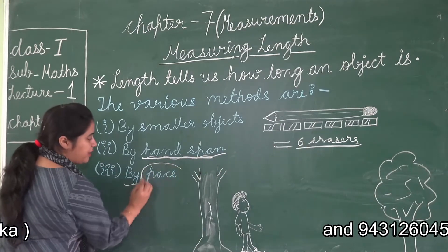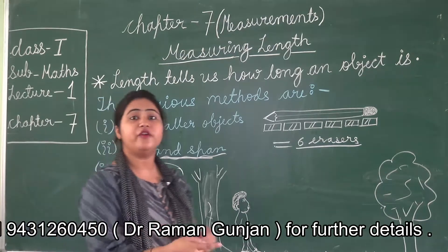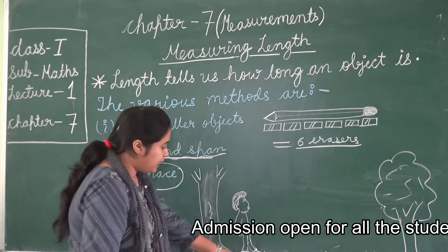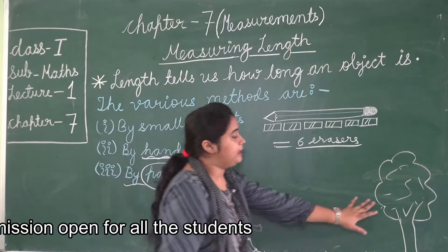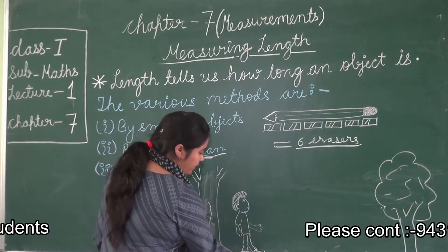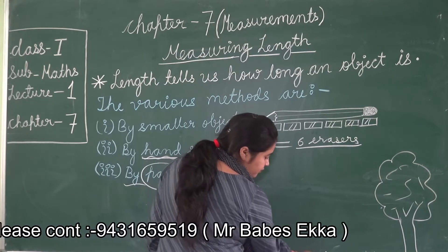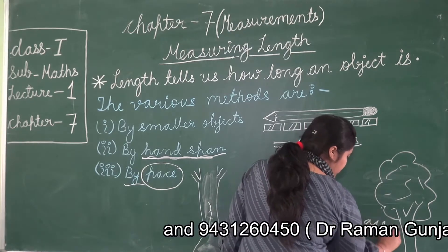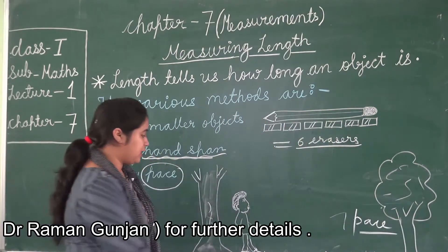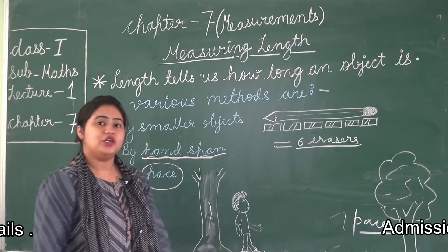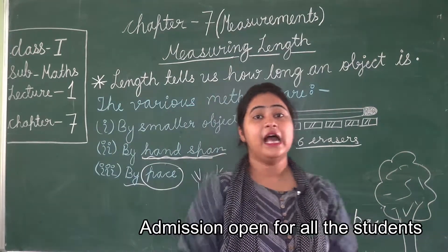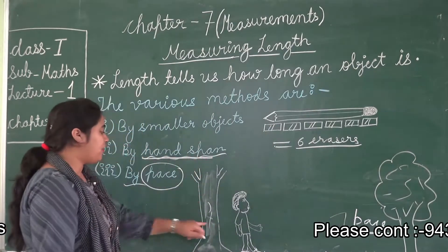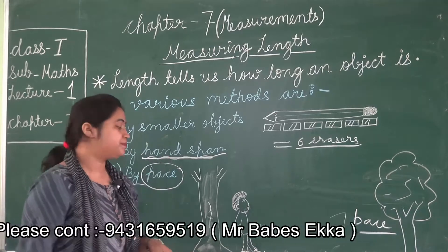The third method is by pace. Pace is a new term - pace means the length between your feet. Like, if a boy is standing near a tree, the distance between his feet is one pace. If the boy walks toward the tree, it takes 1, 2, 3, 4, 5, 6, and 7 paces - total 7 paces. So pace is the length between your feet. We have now learned three methods for measuring length: by smaller object, by hand span, and by pace.